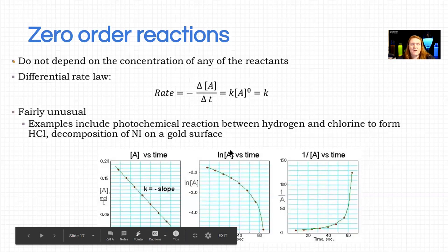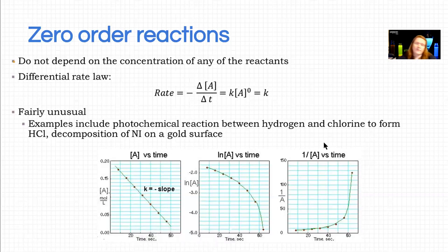So zero order, A versus time is zero. ln of A versus time is first order. One over A versus time is second order. You'll see why in a second. There's a logic to this.